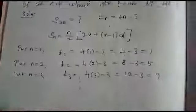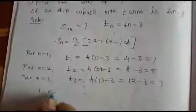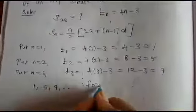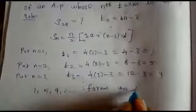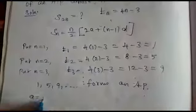Now, first term. What is first term? 1. Second term 5, third term 9, and so on. This forms an AP. Here, what is first term? First term a equals 1.